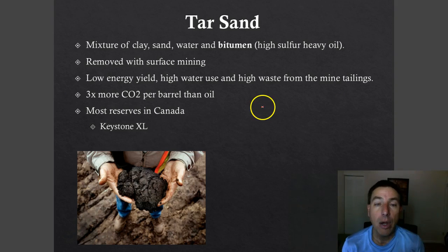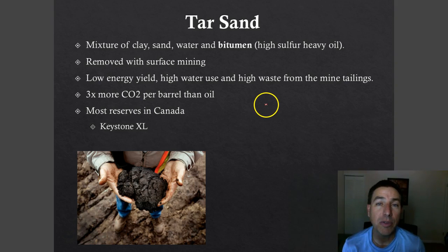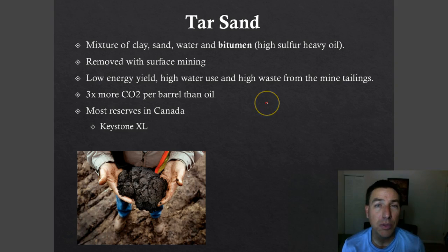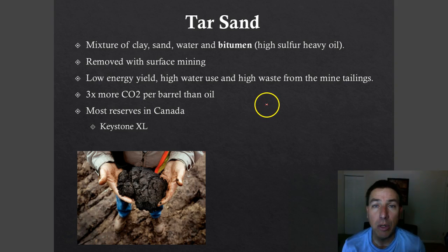Another type of alternative to oil is what we call tar sands. Tar sands are a mixture of clay, sand, water, and bitumen. Bitumen is the useful part of the tar sand — it's the thick oil mixture — and this can be refined just like regular oil. It's a little bit thicker, but it can be refined.